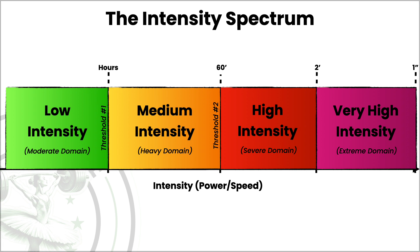Very simply put, the intensity spectrum is composed of four domains: low intensity, medium intensity, high intensity, and very high intensity. The technical terms are the moderate domain, the heavy domain, the severe domain, and the extreme domain. The moderate domain is below the first physiological threshold; the heavy domain is between the first and second threshold; the severe domain is above the second threshold; and the extreme domain spans from about two minutes of effort duration up to one second of effort.